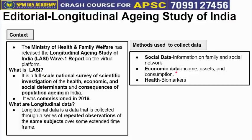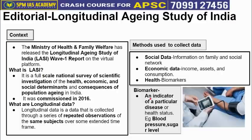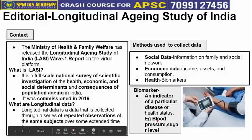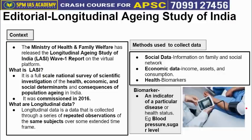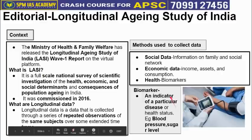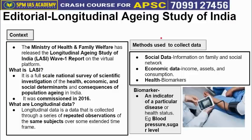For health indicators, biomarkers data was collected. Biomarkers are indicators of a particular disease or health status. For example, blood pressure or sugar level are biomarkers — measuring someone's blood pressure gives a biomarker indicating the overall health status of that person. Based on biomarkers, economic status, and social data, the Longitudinal Aging Study of India report was published for the old age population.